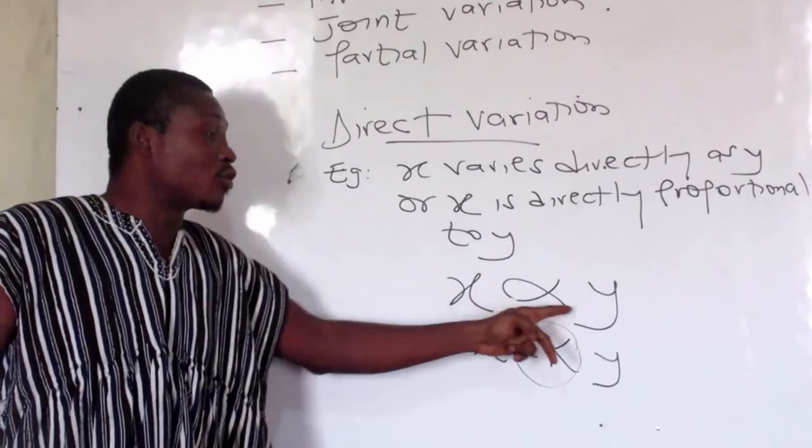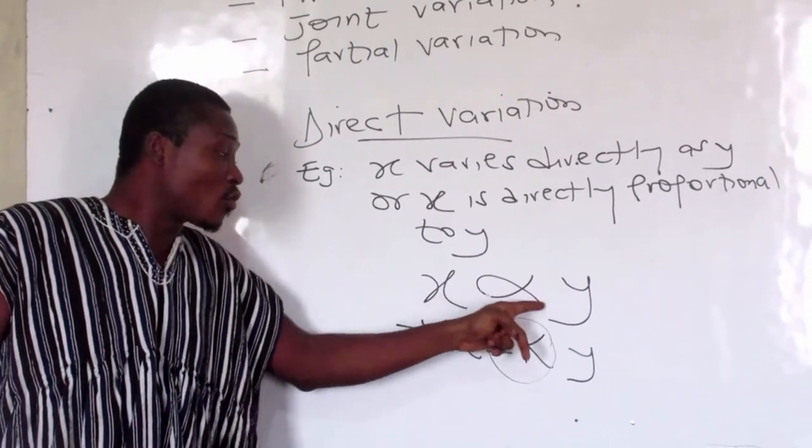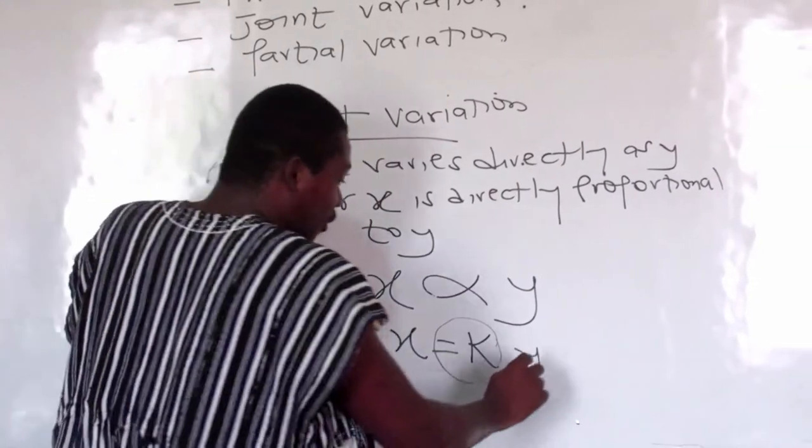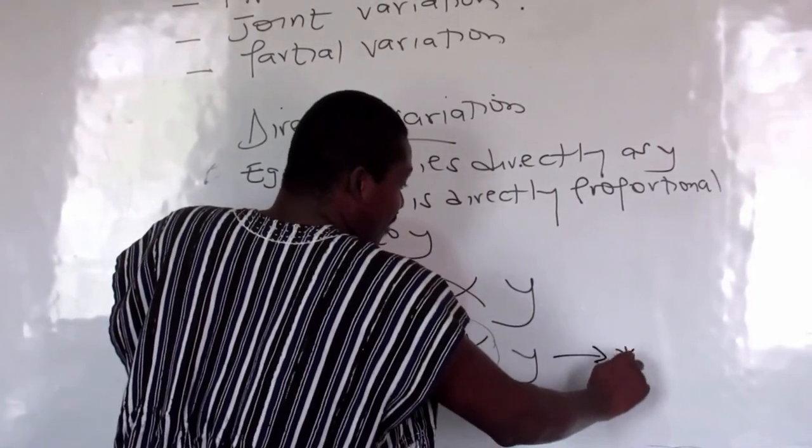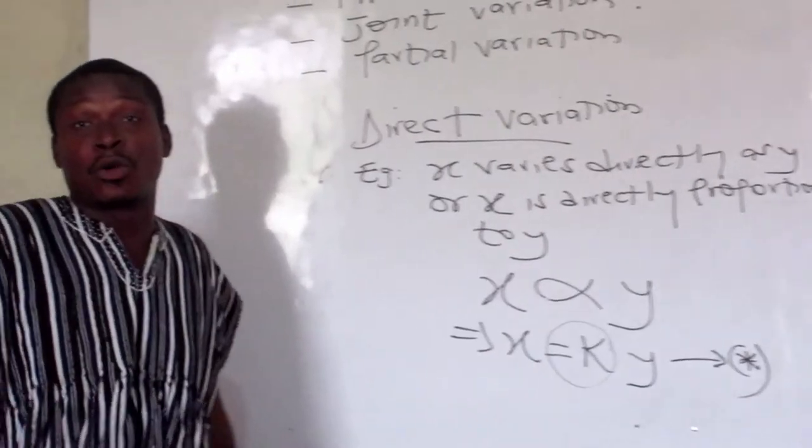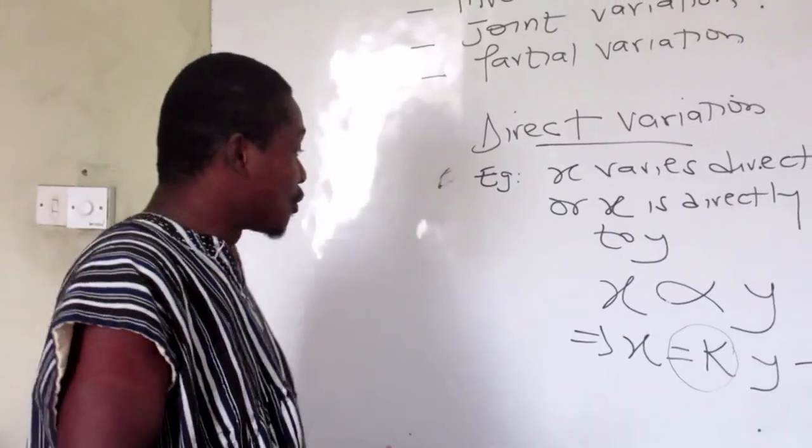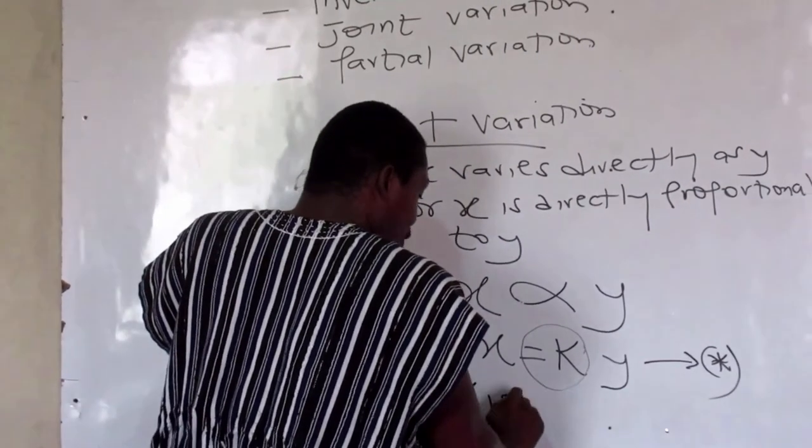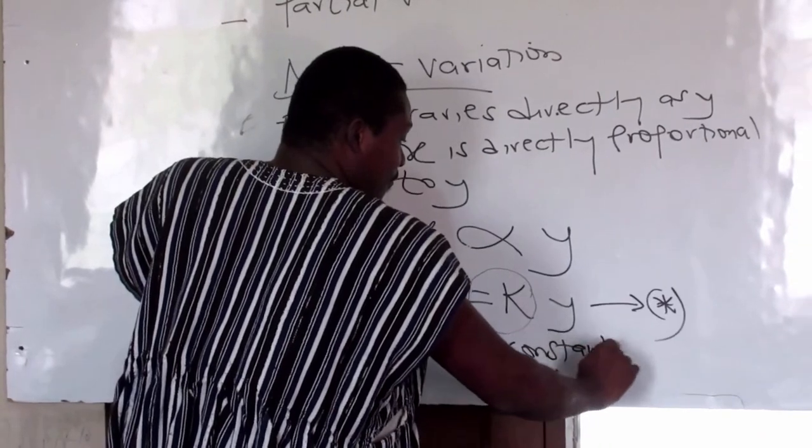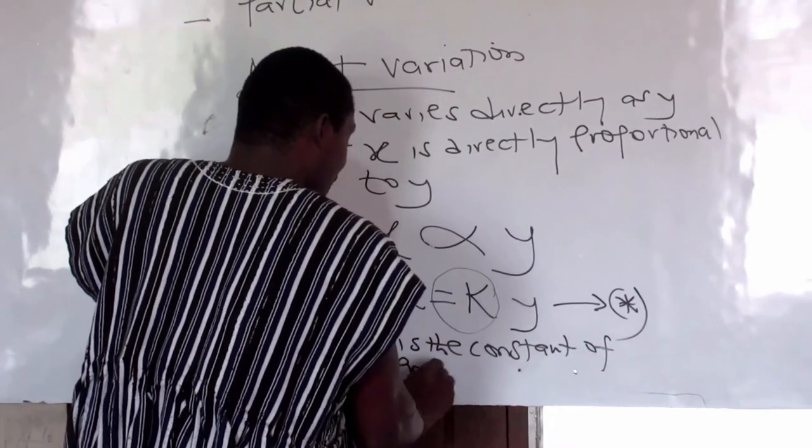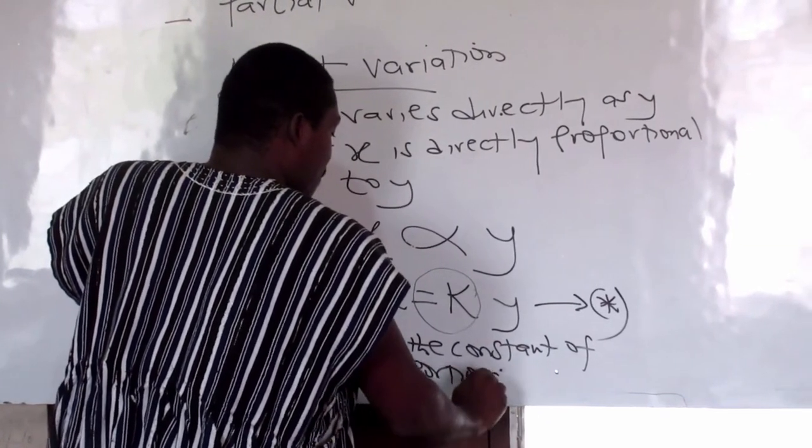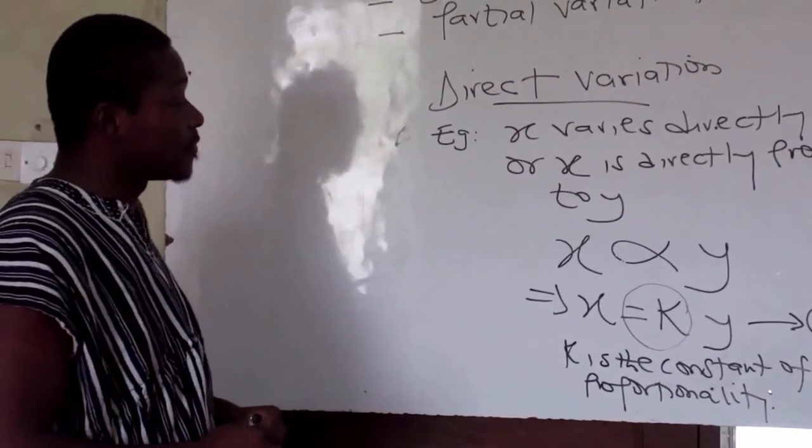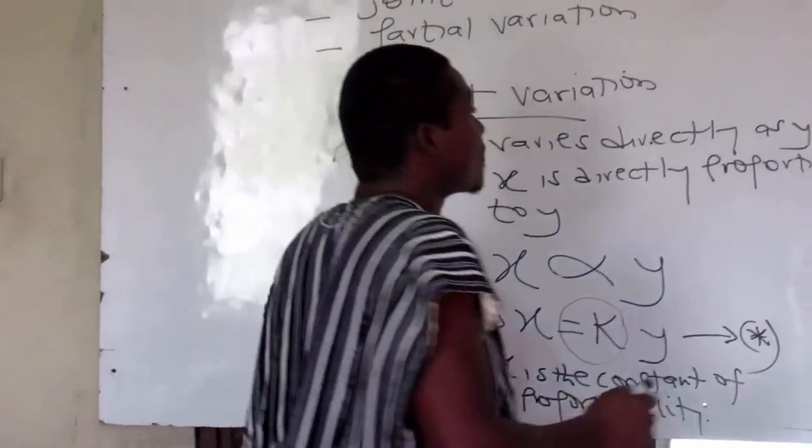So that is it. So x is proportional to y, so anything proportional to y there is a constant. So that is equal to and the constant here. So we can call this equation, maybe equation one or whatever you want to call it. So this k is the constant of proportionality, or sometimes called a variation constant.